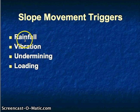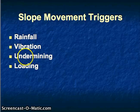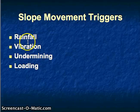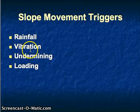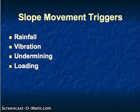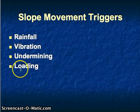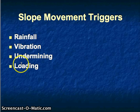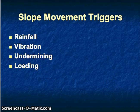These triggers are generally related to those slope factors. Rainfall adds water and destabilizes the slope. Vibration — as discussed with earthquakes — can also lead to slope failure; sometimes we see slope movement when there are earthquakes. Undermining and loading can also trigger a slope failure.